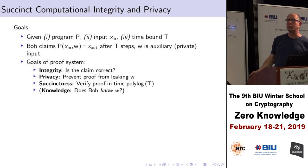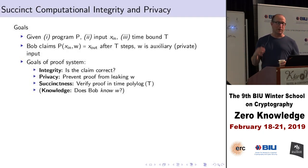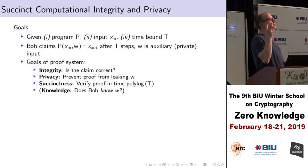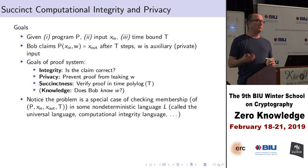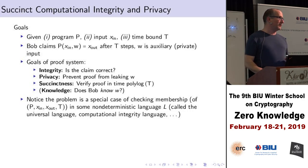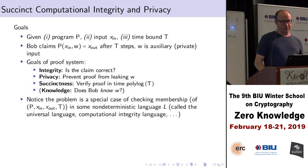We would like this proof system to have the property of being a proof system — of allowing us to enforce and check integrity, correctness of the system. We want it to be zero-knowledge, to prevent knowledge about the auxiliary inputs from being leaked. We want it to be succinct — verifiable in polylogarithmic time in T. And we would like it to be proof of knowledge: does Bob actually know a witness, or is he just cheating and knows that some witness exists? This is a special case of checking membership in a non-deterministic language — complete for non-deterministic exponential time — called the universal language, or the computational integrity language.